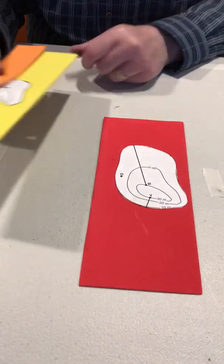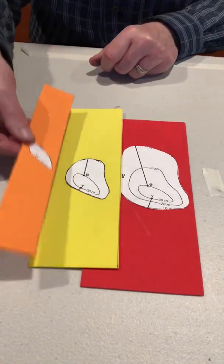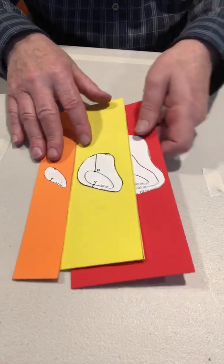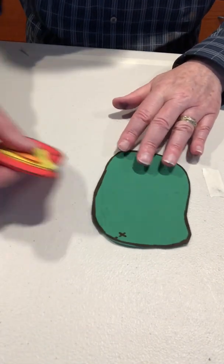And then this gets repeated for the other contour lines on the red piece, the yellow piece, and the orange piece. So what you end up with is these pieces like so.